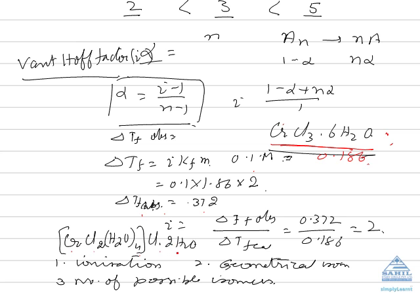Now, dear students, the various questions which can be put forward to you is: what are the possible isomers of this compound? Number one. Number two, what type of isomerism will it show? There can be choice of ionization isomerism.